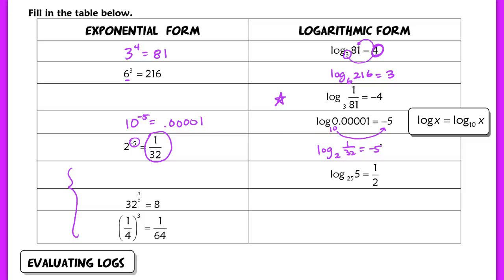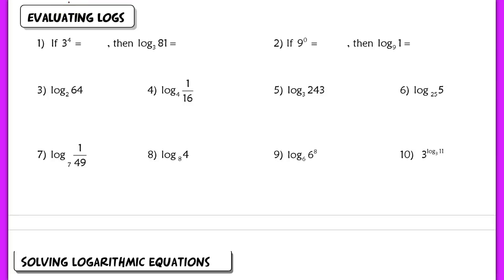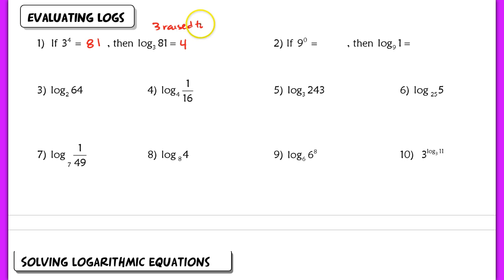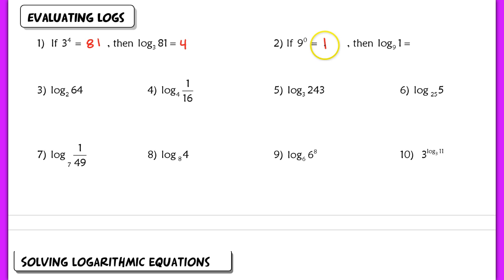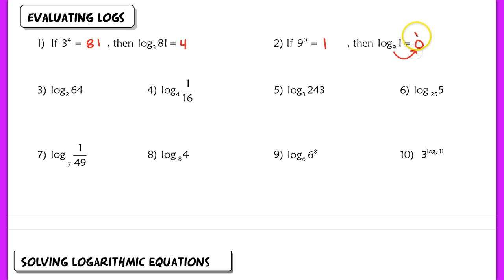That's our first objective — rewriting between exponential and logarithmic form. It will really help when you evaluate logs if you can simultaneously think of both forms. When evaluating logs, you're thinking backwards about exponential form. If 3 to the 4th equals 81, then log base 3 of 81 must equal 4 — it's the exponent you need to raise the base to in order to reach the argument. Every time we complete a question, we ask: what number do I have to raise the base to in order to equal the argument?